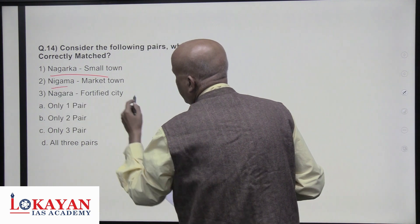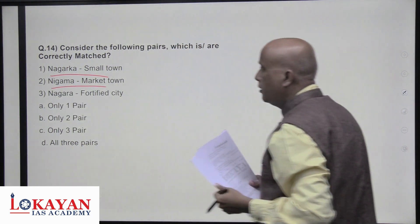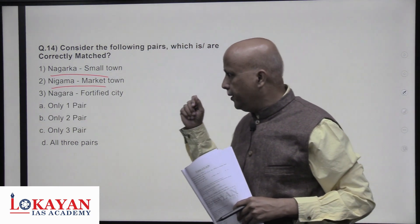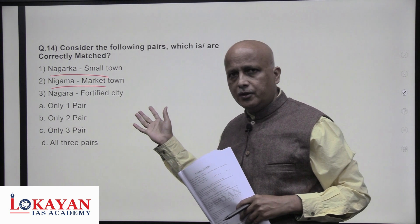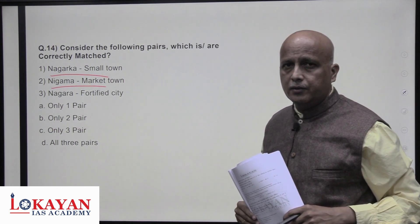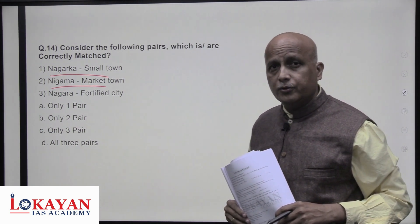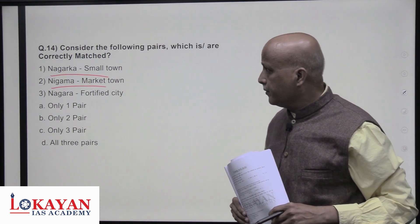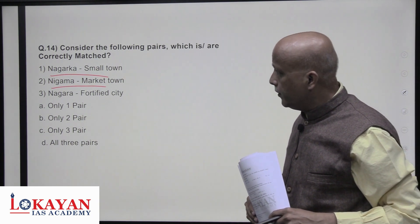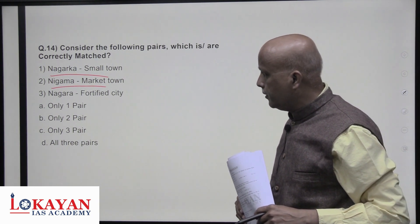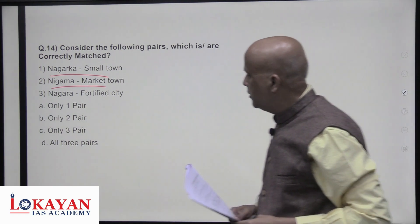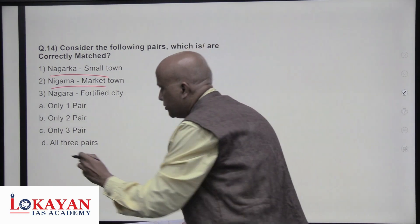Consider the following pairs about town classifications. Nagaraka is a small town, Nigama is a market town — like BSNL (Bharat Sanchar Nigam), these were state-controlled towns — and Nagara is a fortified city proper. All three pairs are correctly matched.